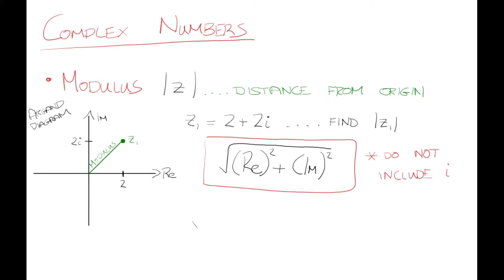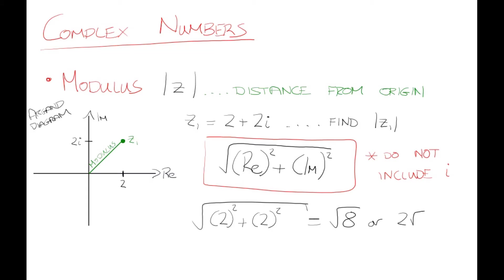Let's apply it to z1. It's the square root of the real part, which is 2 squared, plus the imaginary part, also 2 squared — I didn't include the i. That gives the square root of 8, or 2 root 2 on your calculator. That's the modulus — the distance from the origin. It's always useful to plot your complex number, especially when starting out.